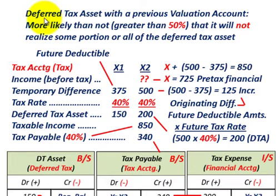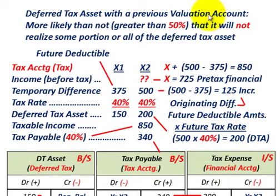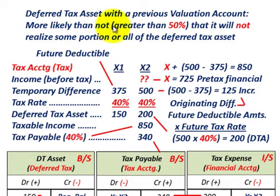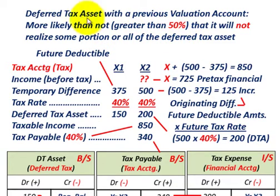What we're going to be going over here is a deferred tax asset where it has a previous amount set up in its valuation account. This valuation account is set up where it's more likely than not — or greater than a 50% chance — that you will not realize some portion or all of the deferred tax asset.